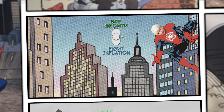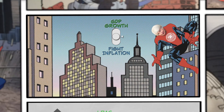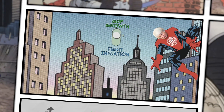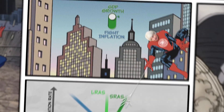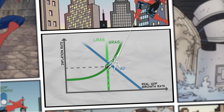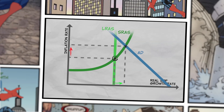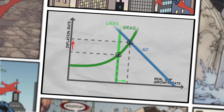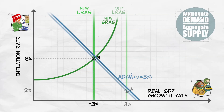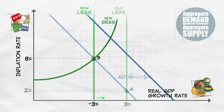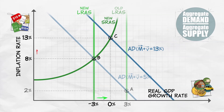Alternatively, the Fed can try to increase real growth by increasing the money supply and increasing aggregate demand, but that comes at the cost of even higher inflation.